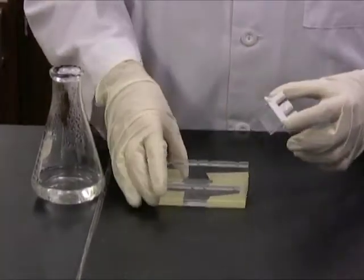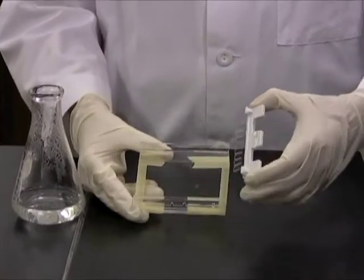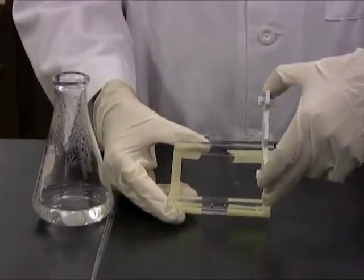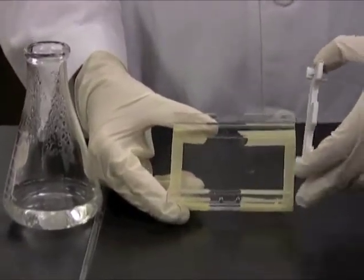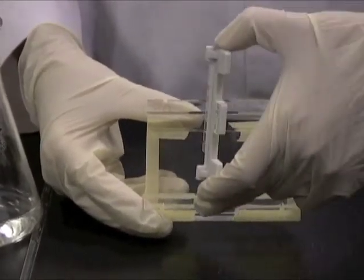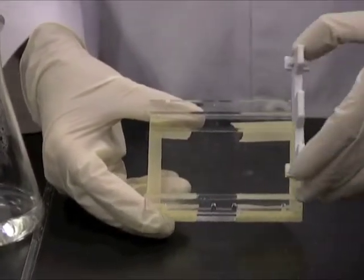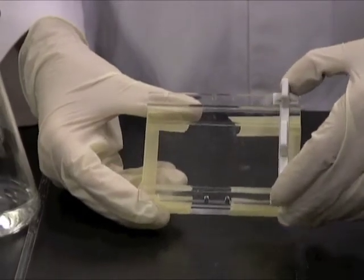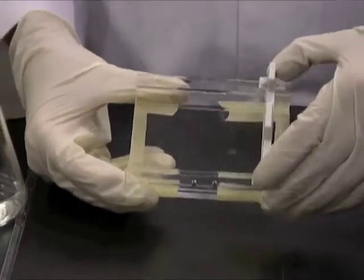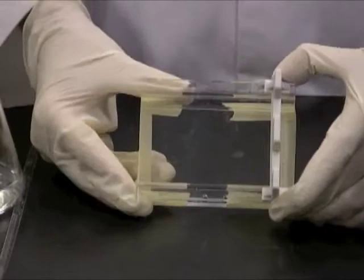As you see on this casting tray, there are several places where you can put the comb. What we want to do in most cases is put the comb at one end rather than at other places along the gel, because we want to run your samples through the gel the longest distance possible so that they separate.